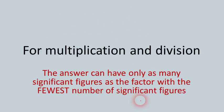What about multiplying and dividing? The rule is different. Instead of counting decimal places we count significant figures — if you need a refresher on significant figures, see the previous lesson. The answer can only have as many significant figures as the factor with the fewest number of significant figures.